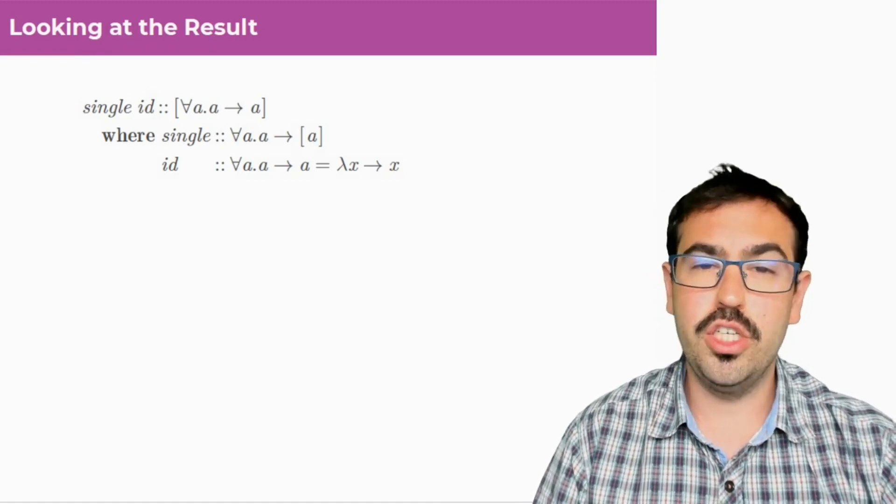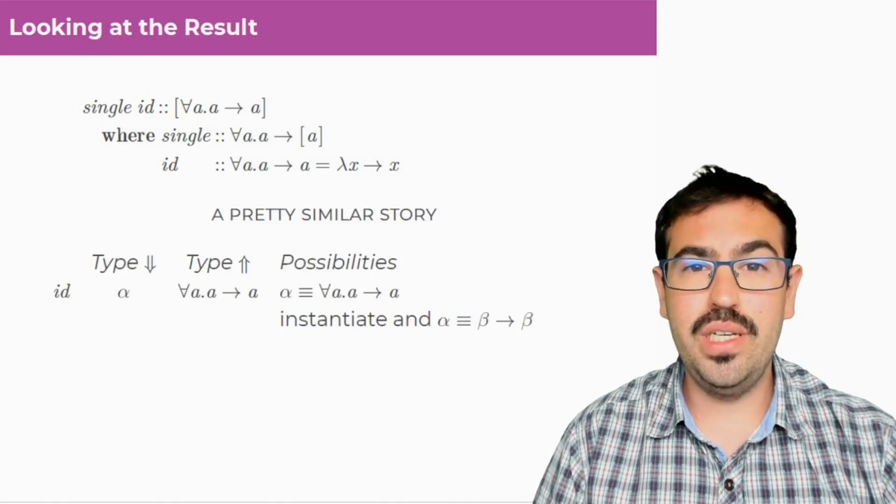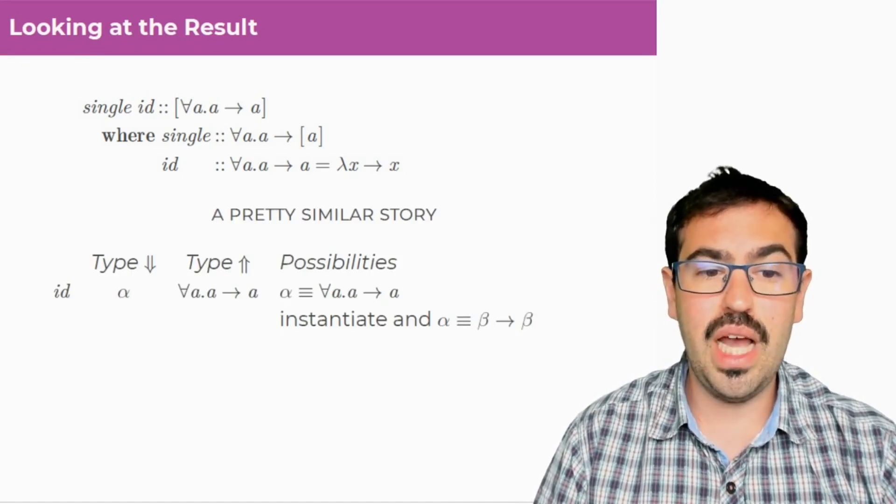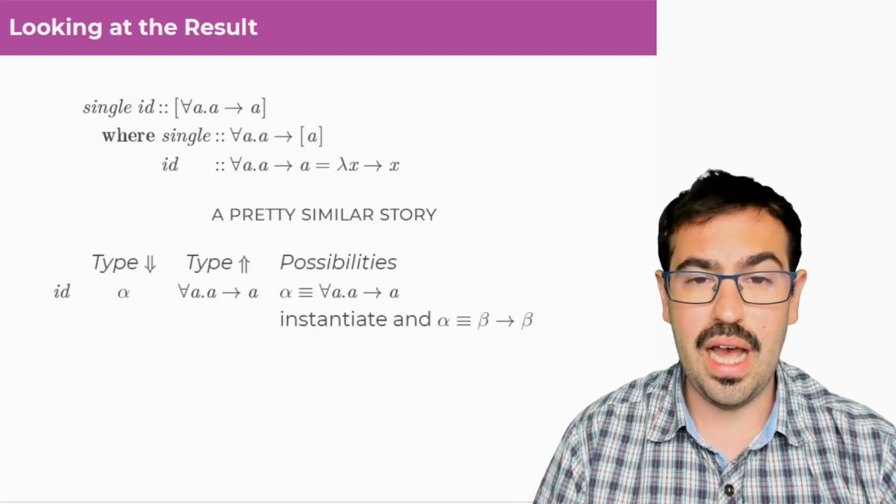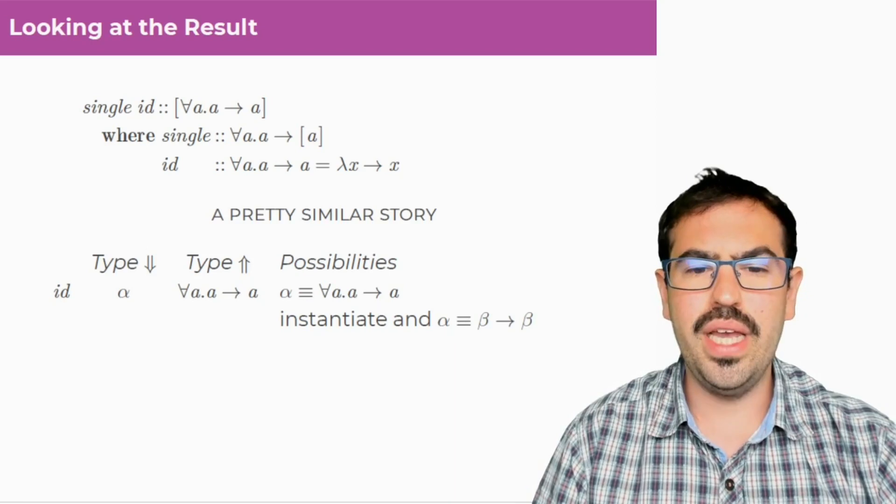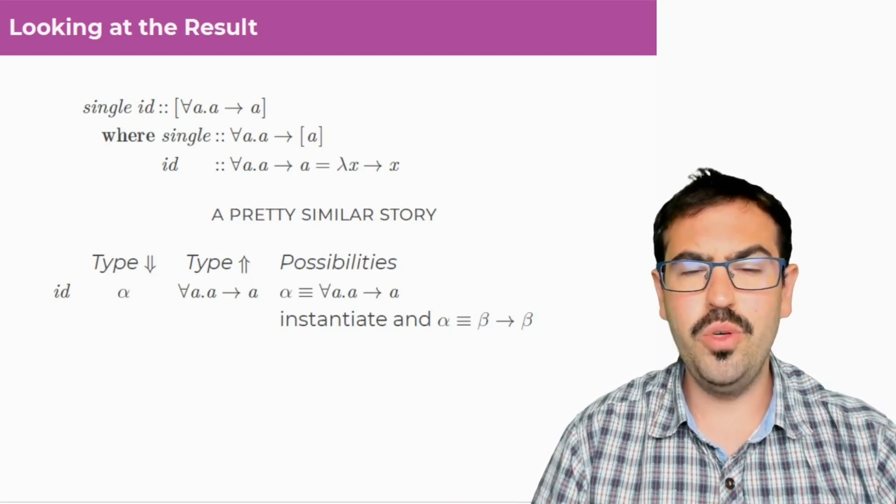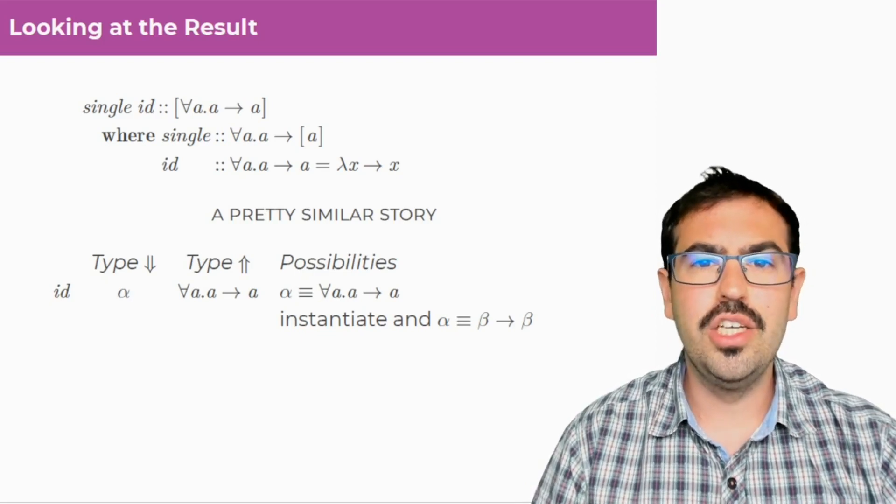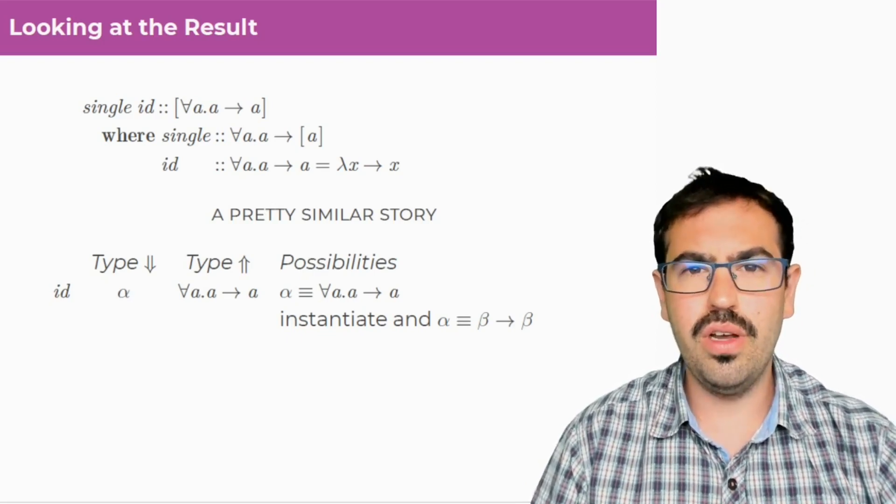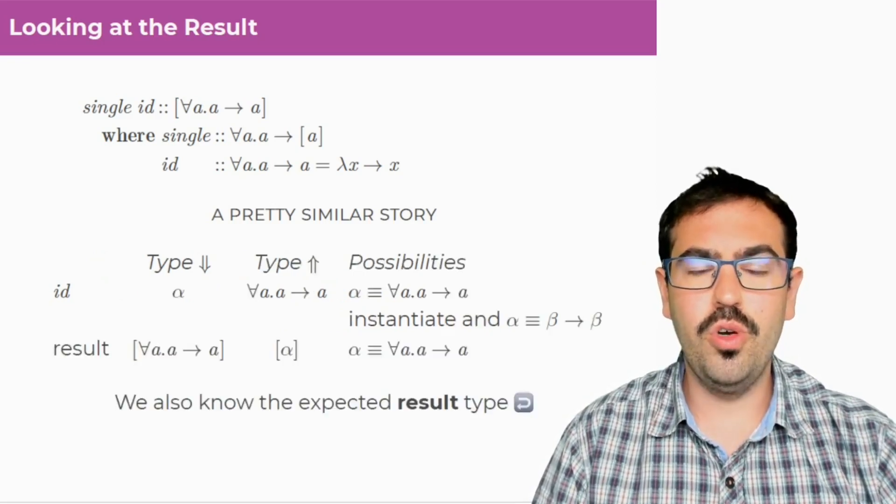We can also get some other information into account. Imagine, for example, we have this call to single ID. Well, we have a pretty similar story with the arguments, the type of ID is going to be alpha when we push it, and then we have a for all A dot A to A. So we have two choices here. Again, we can make alpha equal to for all A dot A to A, or we could instantiate. So quick look gives you no information here.